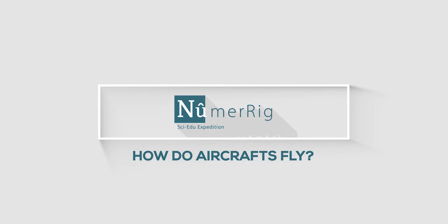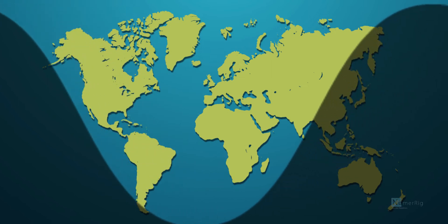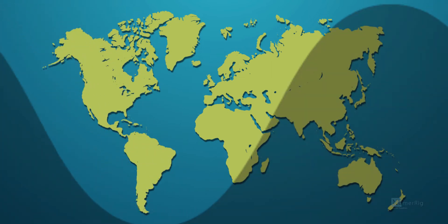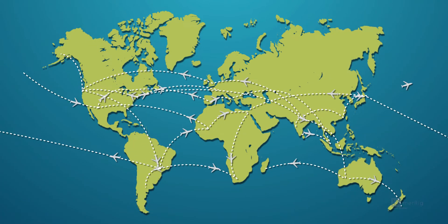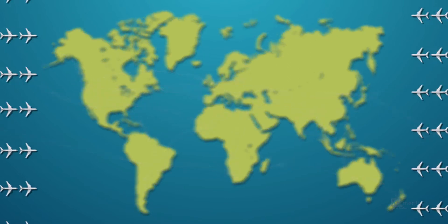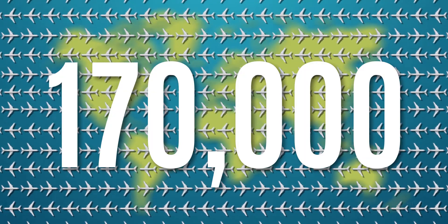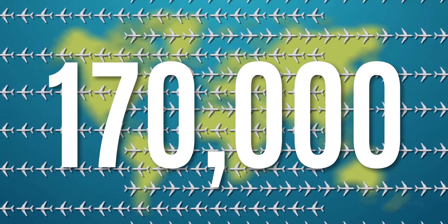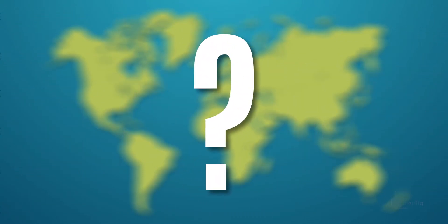How do aircraft fly? Whatever time you are watching this video, right now there are 5,000 commercial planes flying above in the sky, and a whopping number of 170,000 flights flying every day. But how do airplanes fly? What is the principle behind them?